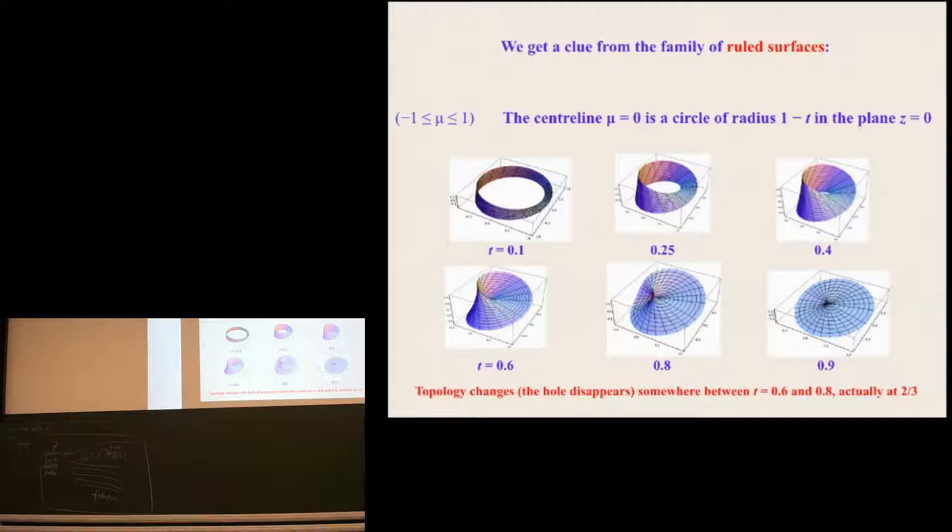You take the Maggioni and Ricca parametrization for the boundary, and you simply place a straight line from a point S on the boundary to point S plus π on the boundary, and put a parameter on that line, call it μ going from minus one to plus one, and you get a parametric representation turned into two parameters. And the center line μ equals zero is in fact a circle of radius one minus T in the plane Z equals zero.